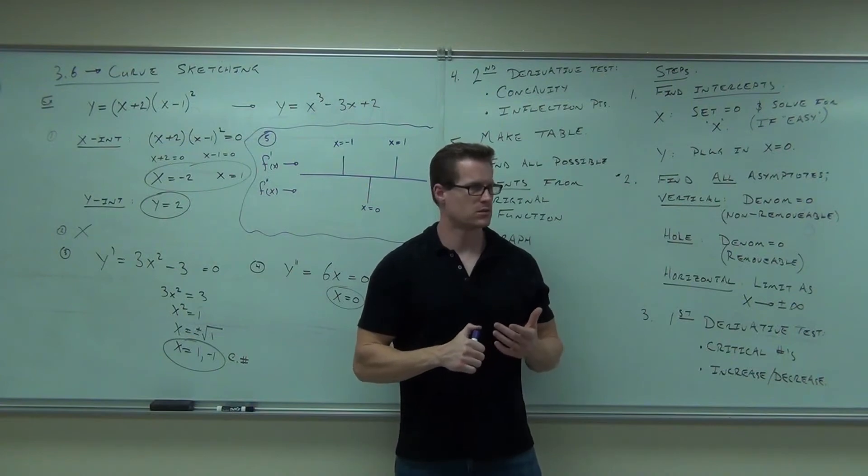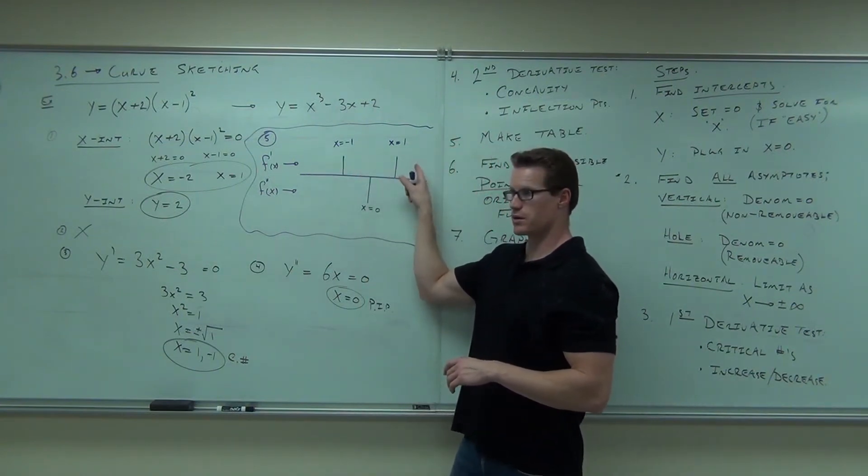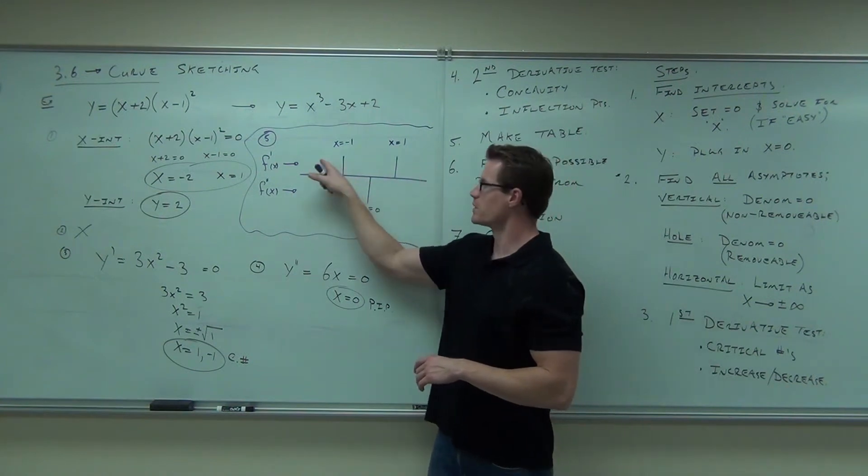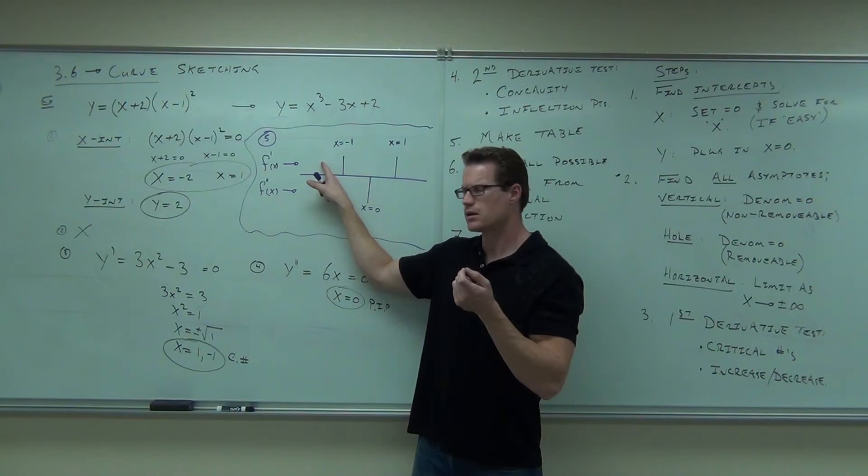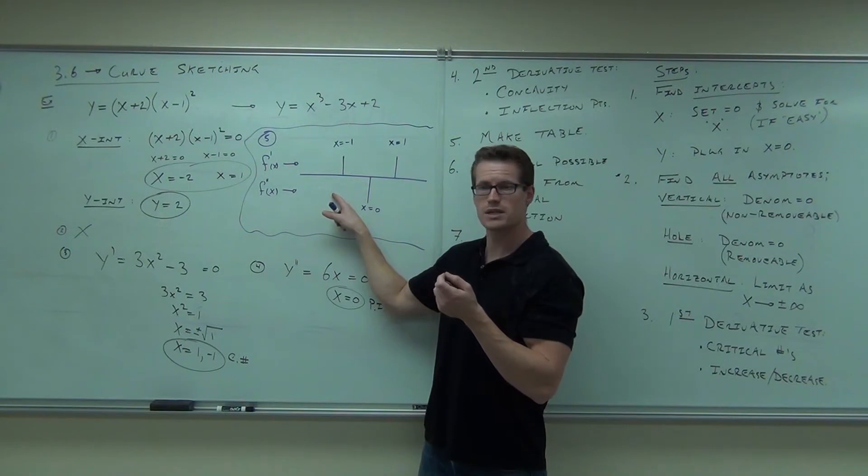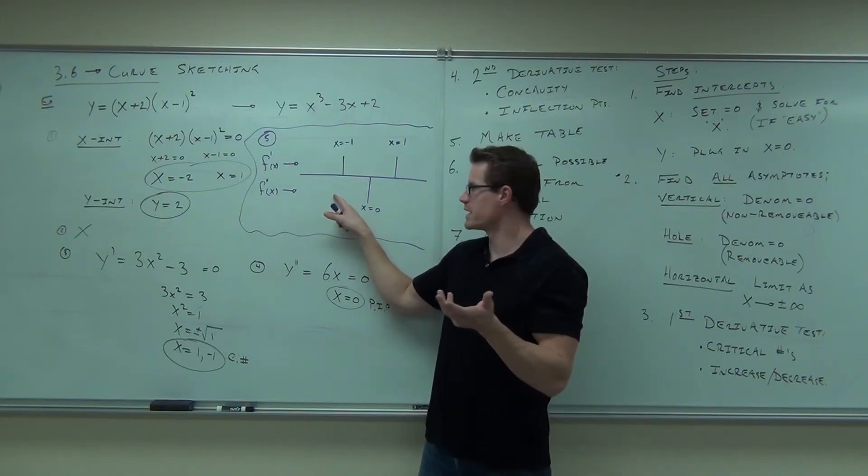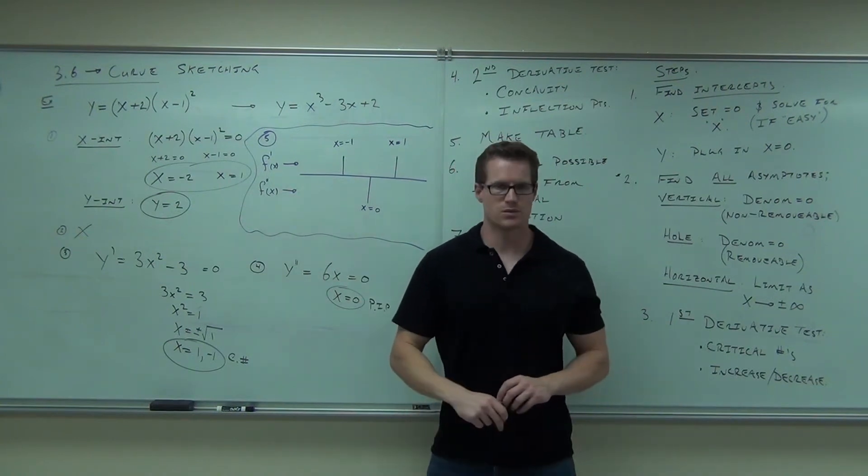What do you do now? Start test of numbers on each one section. So every single interval here, you follow? What number are you going to check here? And where are you going to check it? In the first derivative. What are you going to check here? Negative one would work, right? Negative one, you're going to check it in the second derivative.